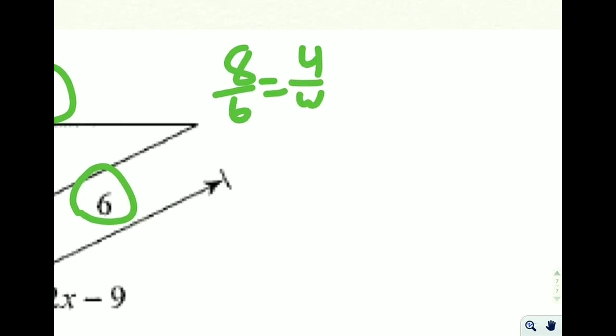And when we cross multiply, we get 8w equals 4 times 6 which is 24. When we divide both sides by 8, we get w over here, and 24 divided by 8 is 3.